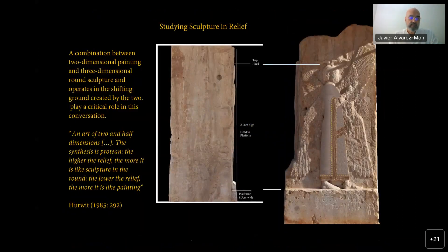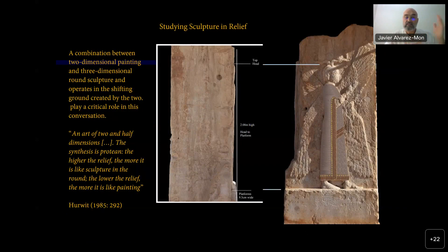Sculpture in relief is a combination between two-dimensional painting and three-dimensional round sculpture, operating in the shifting ground created by the two — generating what has been defined by Jeffrey Erwitz as an art of two-and-a-half dimensions. The higher the relief, the more it is like a sculpture in the round; the lower the relief, the more it is like painting. Hence, the scope of possibilities and nuances in which to explore form and modeling in relief sculpture is wide-ranging.